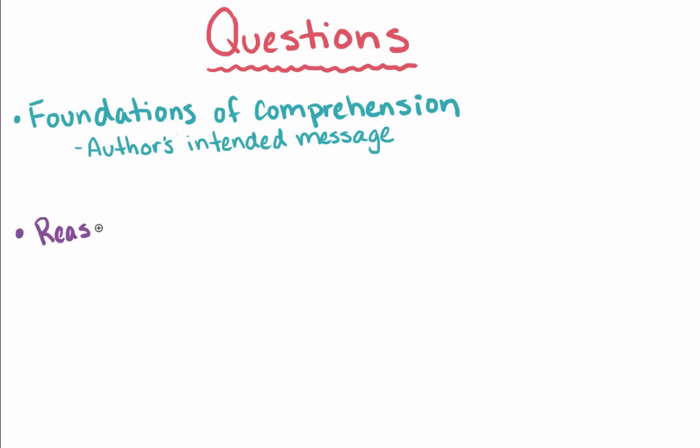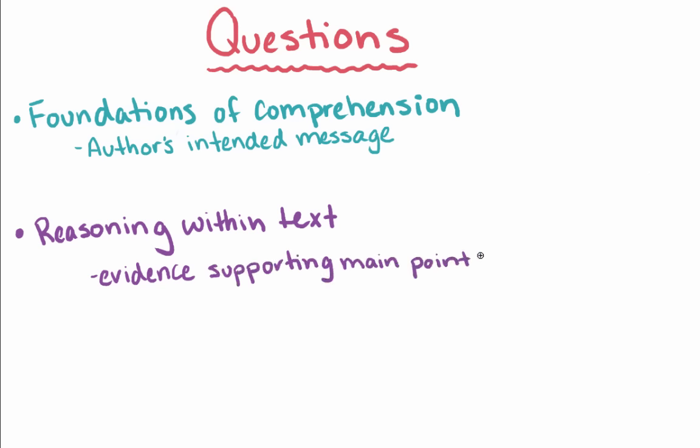The second category is called Reasoning within the text. These questions mainly ask you to think about the reasoning within an author's argument. Such as, what claim is an author trying to support with a piece of evidence? Or, is an argument flawed?